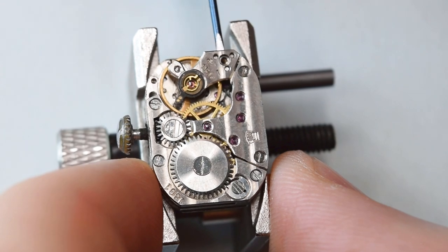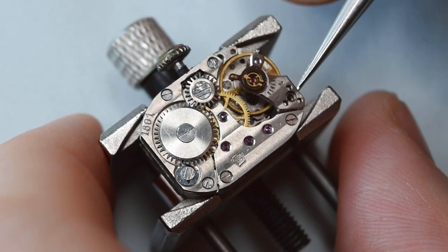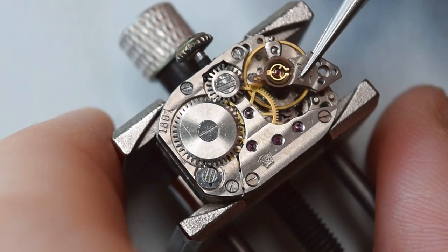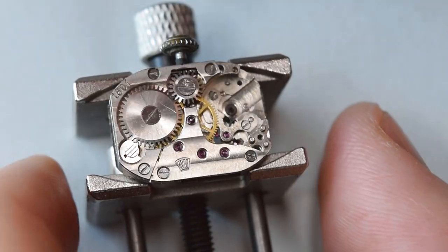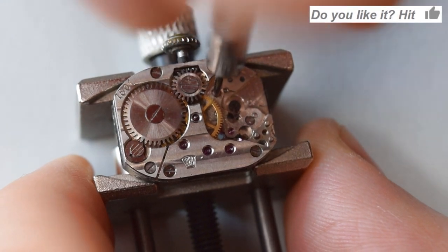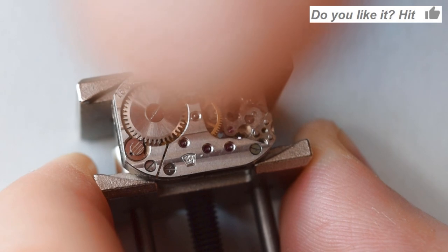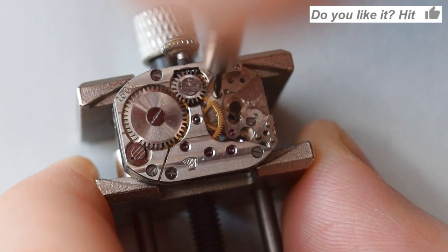That's the spring. Let's unscrew the screw from the balance cock and remove the whole balance. On the main plate there are three pins adjusting the balance cock. Now we need to remove the balance.